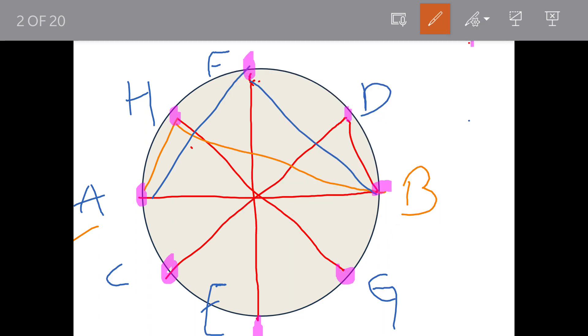One side we have drawn three triangles, and in this manner the other side also we can draw three triangles. That means using AB as the base, one diameter, we are able to draw six triangles.